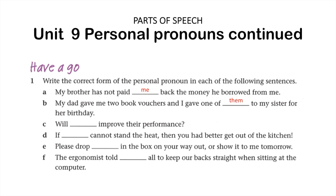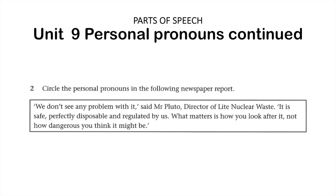Have a go at the other activities. Typically speaking, as you're reading the sentences out loud, you'll hear the word that makes sense in each of them. Question number two: circle the personal pronouns in the following newspaper report. Pretty easy — I'll only do the first one for you. We read through and we find 'we,' which is of course a personal pronoun, referring to a group of people. Read through the rest of the sentences and see if you can highlight the other ones.